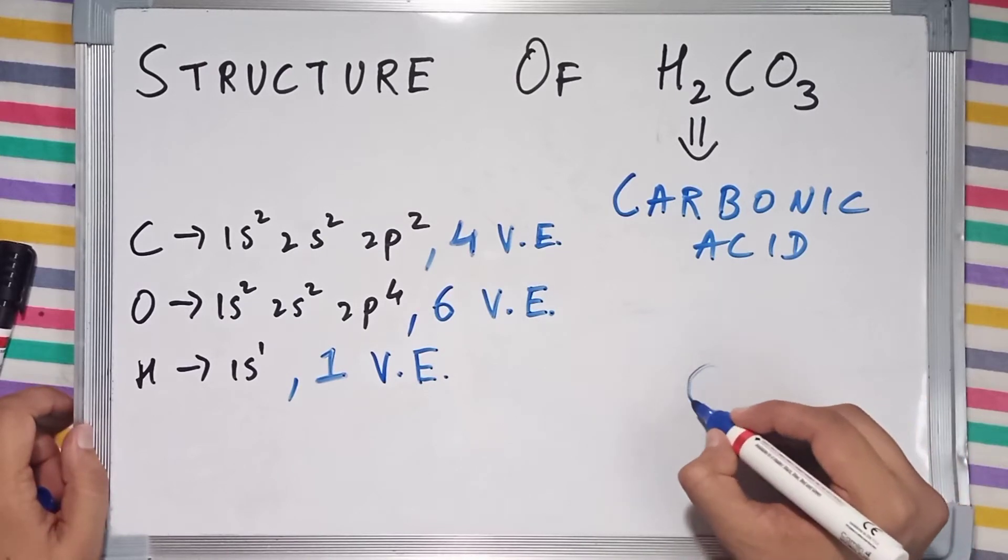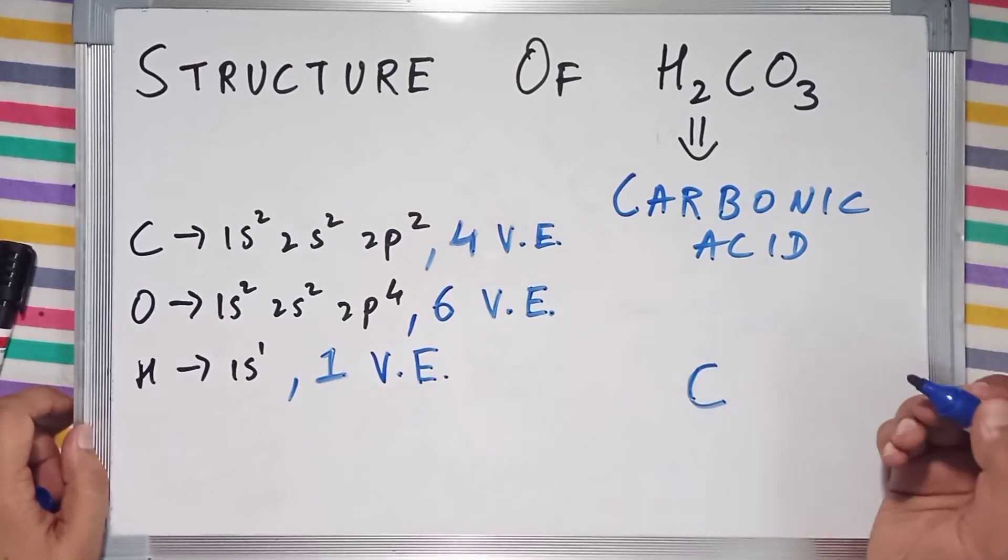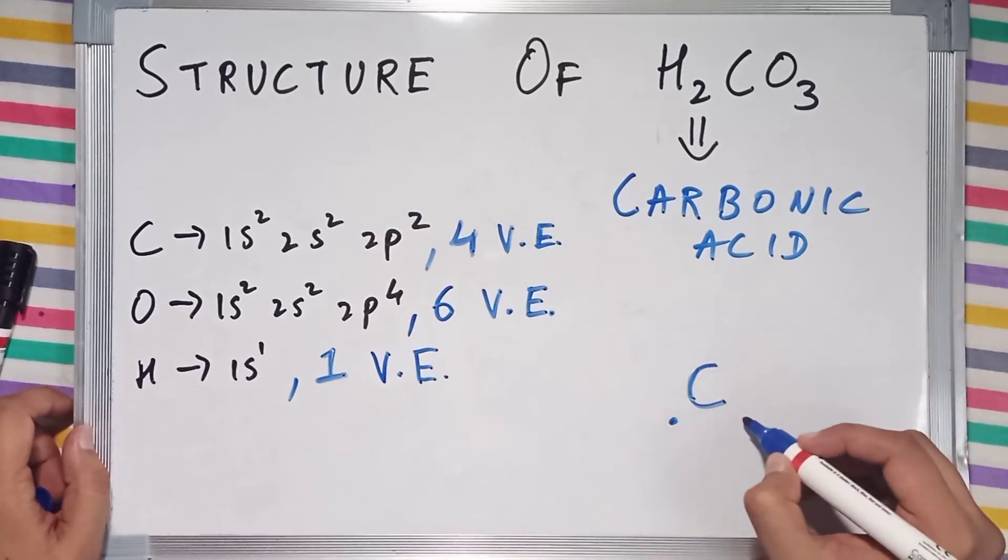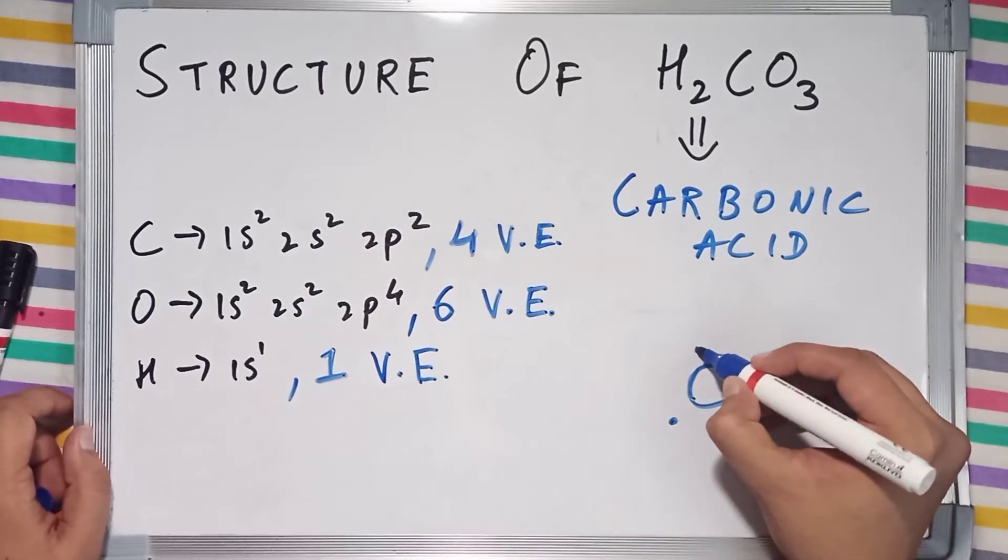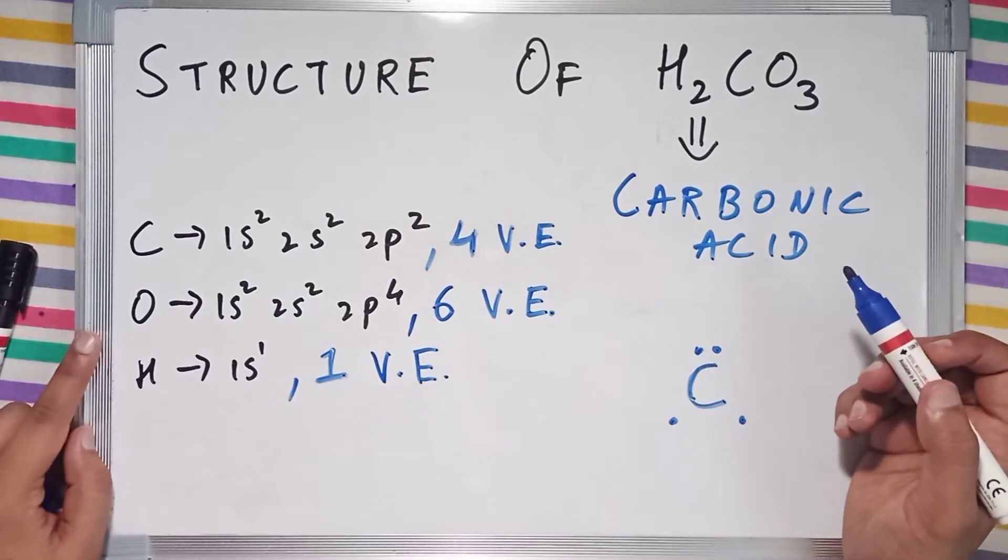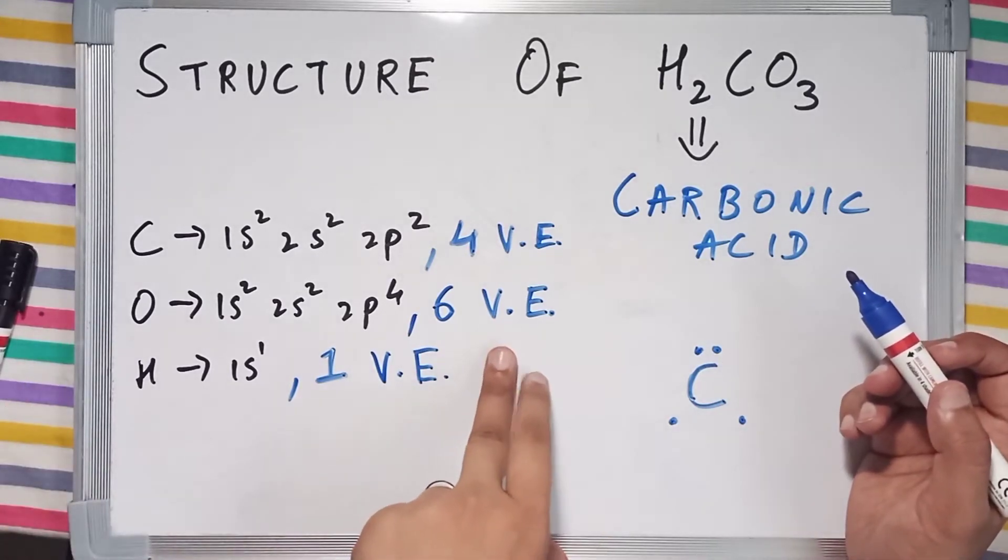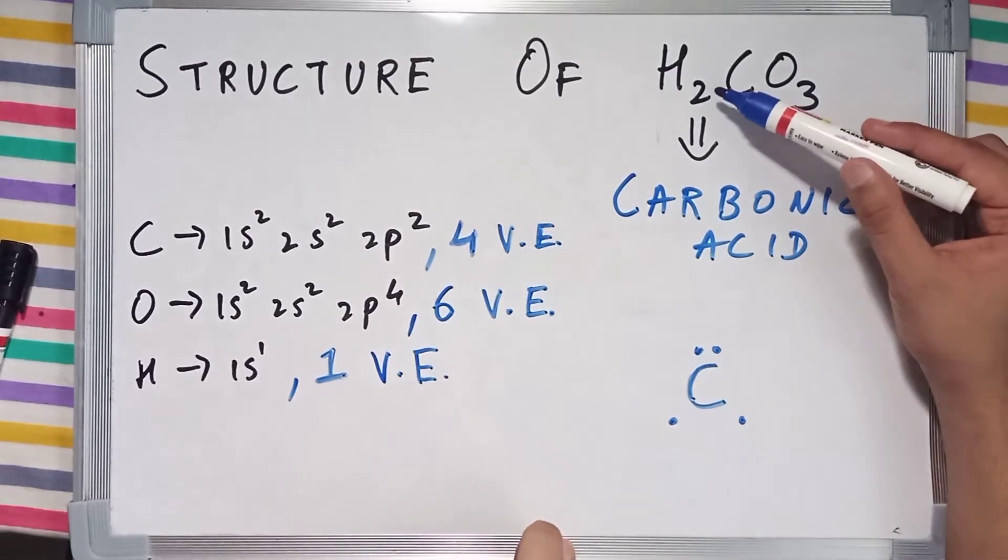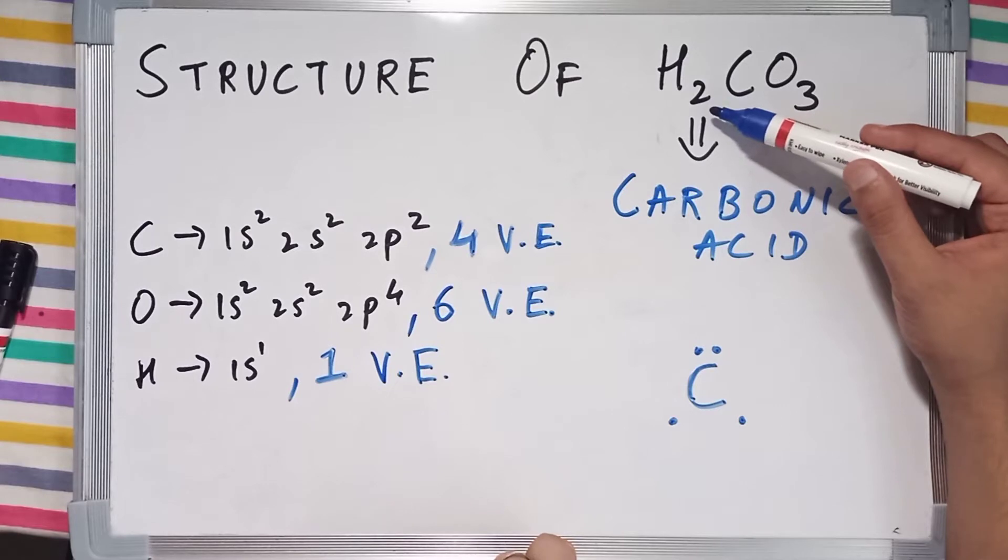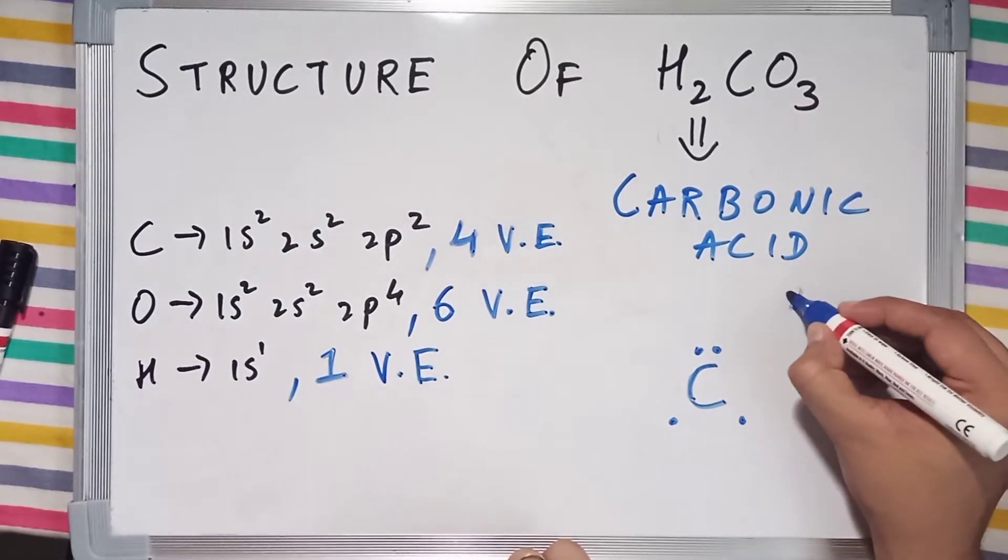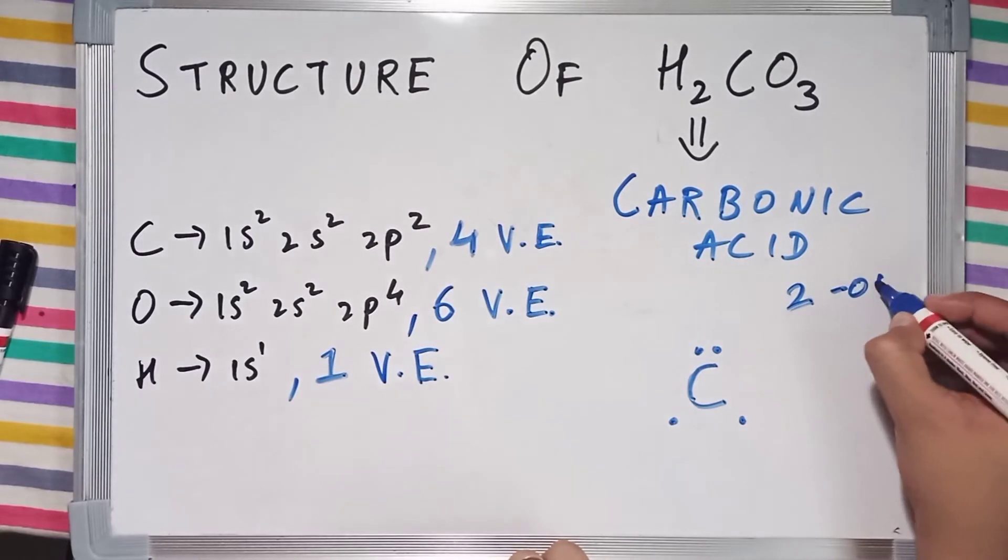The central atom carbon has 4 valence electrons. Oxygen has 6 valence electrons, but before that you can see that in H2CO3 there are 2 hydrogen atoms, which means there will be 2 OH bonds.